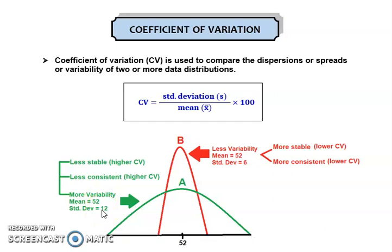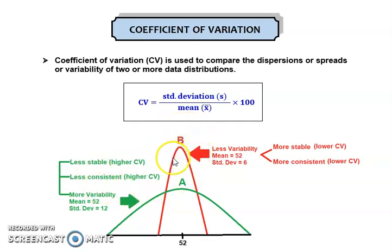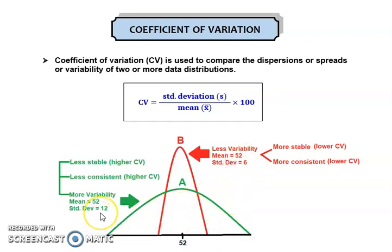Since the mean value is the same, we can use standard deviation to determine which is more or less variable. With a standard deviation of 12, distribution A is more spread, more variable, and less stable or less consistent compared to distribution B. You can see the green curve is wider, while the red curve is narrower because distribution B has a smaller standard deviation.